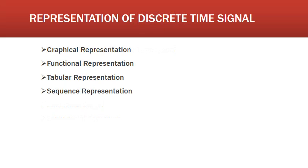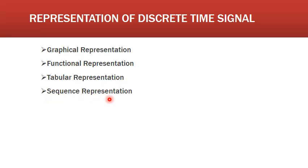Discrete time signals can be represented in many ways. They are: graphical representation, functional representation, tabular representation, and sequence representation.